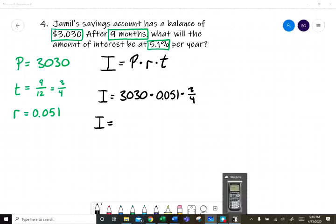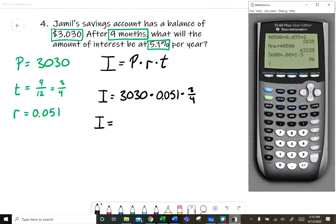Pulling up the calculator. $3030 times 0.051 times the fraction 3/4, so times 3 divided by 4, equals...